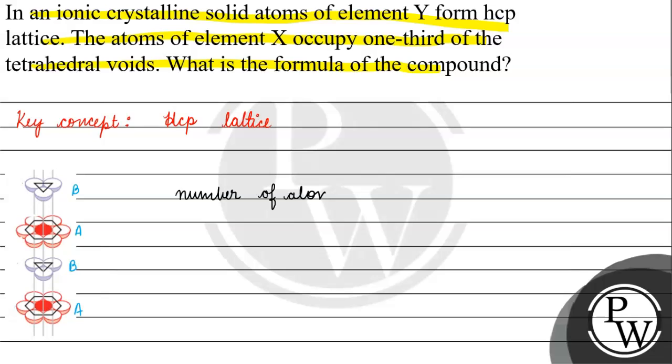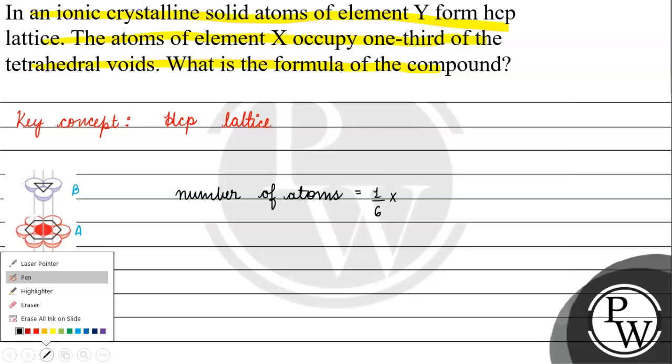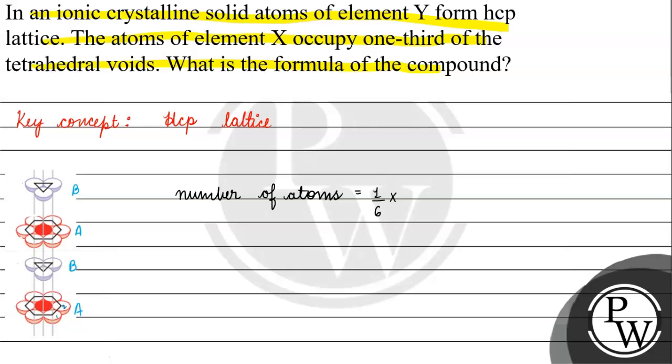If we look at number of atoms, if we look at the particles in the corners, the atom contribution is 1 by 6. How many particles are in corners? We can count them: 1, 2, 3, 4, 5, 6, 7, 8, 9, 10, 11, 12.